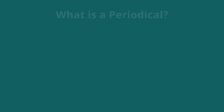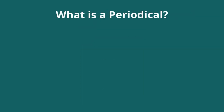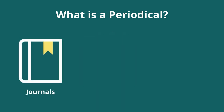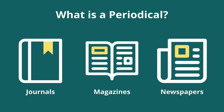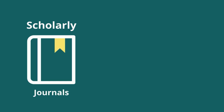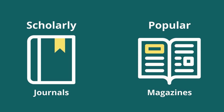A periodical is simply a publication that is published at regular intervals and may come in many forms, including journals, magazines, and newspapers. Scholarly periodicals are sometimes referred to as journals, while popular periodicals may be called magazines.